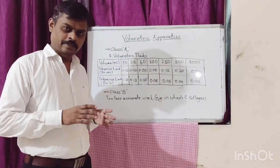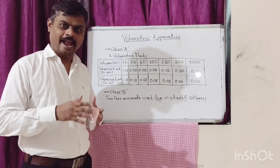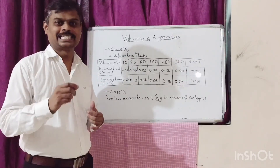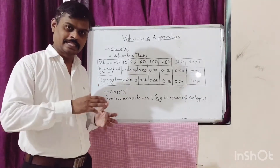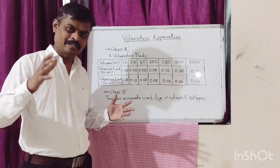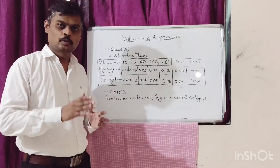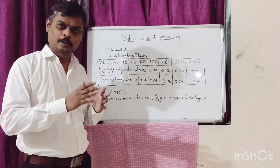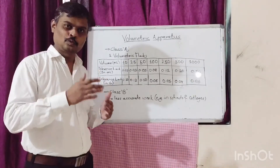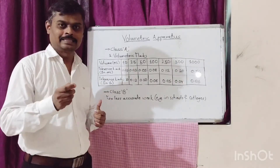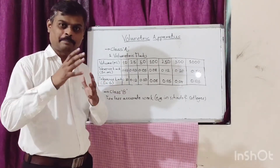Glassware or volumetric apparatus should be dried at or below 60 degrees Celsius. Because at higher temperatures, there is a tendency for glass to expand. Hence, drying above 60 degrees Celsius may cause expansion of the glass, which can disturb the calibration of the volumetric apparatus.